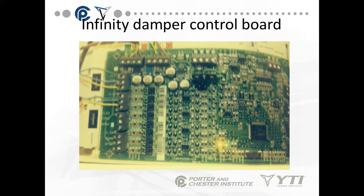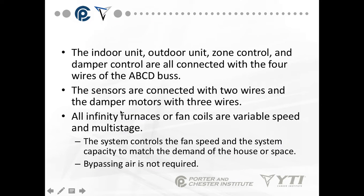This is an example of the Infinity control board — very solid-state components, with all wiring done on terminal blocks using a small thermostat screwdriver. The indoor unit, outdoor unit, zone control, and damper control are all connected with the four wires of the ABCD bus. The sensors are connected with two wires, and the damper motors with three wires.